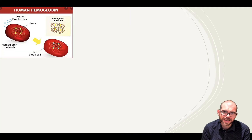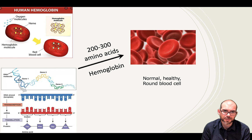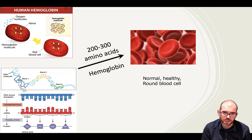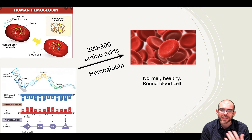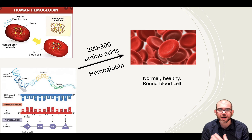Let's look at an example of one such protein: hemoglobin. Hemoglobin is the protein in red blood cells that carries oxygen from the lungs to the body's cells. How do we produce hemoglobin? Through transcription and translation. The gene for hemoglobin is transcribed into mRNA, then translated into different protein products, producing hemoglobin that's about 200 to 300 amino acids long. With a healthy normal hemoglobin, you have a normal circular red blood cell.